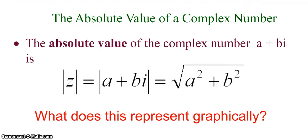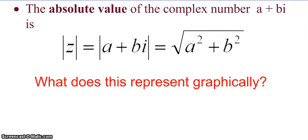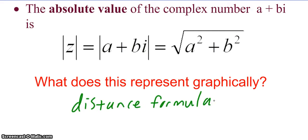What is the absolute value of a complex number? The absolute value of z, which is the absolute value of a plus bi, is the square root of a squared plus b squared. Think about what this represents graphically — that's our distance formula. When you're finding the absolute value of a complex number, you're actually finding the distance that complex number is from the origin on the complex plane. It's also the magnitude of a vector.